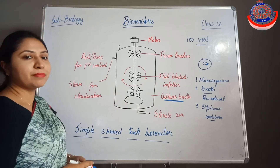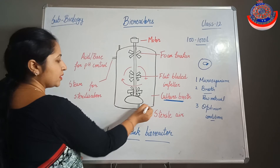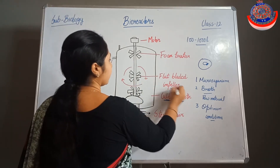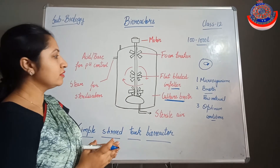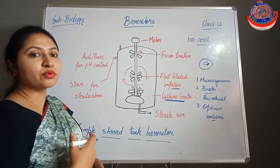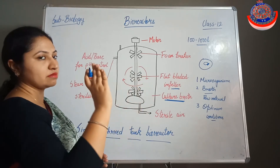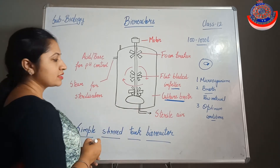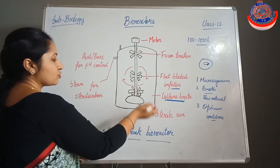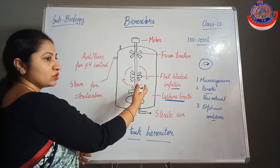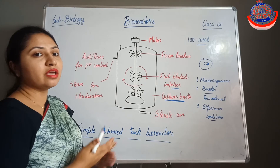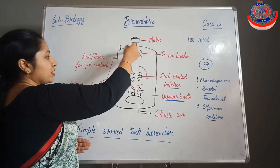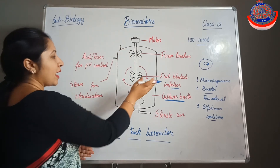Let's discuss the structure of the bioreactor. It is curved from the bottom region, and the blades present are known as impellers. The function of the impeller is to mix the cultural growth with the oxygen. Sterile air - meaning oxygen - is provided through an inlet. This oxygen is mixed with the growth so that the microorganisms are able to take up the oxygen uniformly throughout the overall bioreactor.